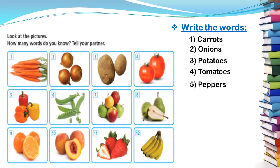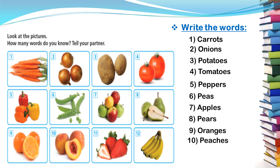Number six — also some mistakes here. They are peas, not green beans. Beans means lubia, so please try to differentiate between the two. Number seven: apples. Number eight: peas. Number nine: oranges, because we have two or three. Number eleven: strawberries — not only one strawberry, but we have three, so strawberries. And the last one: bananas. Correct your mistakes with the green pen.